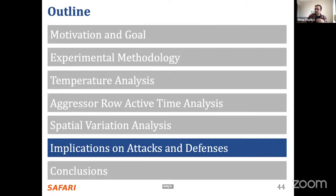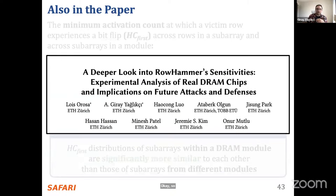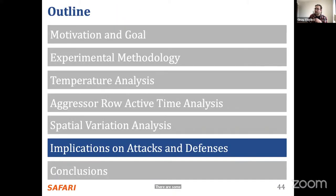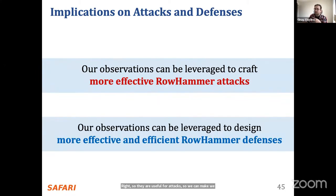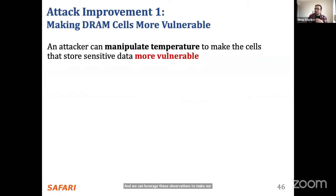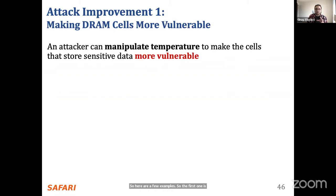Now I'll talk about a few implications. We made all these observations — why are they useful? They are useful for attacks and defenses. We can use them to craft more effective row hammer attacks and leverage these observations to make our defenses more effective and efficient.